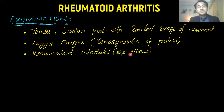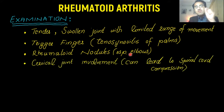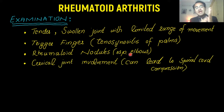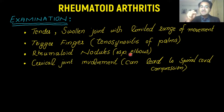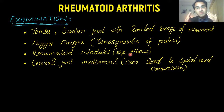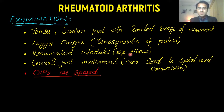Rheumatoid nodules are specially present on the elbows of the patient. Regarding cervical joint involvement: whenever a known patient of rheumatoid arthritis presents with tingling of the hand or back pain, you must suspect cervical joint involvement. RA can cause destruction of the cervical joint, resulting in spinal cord compression, which causes pain in the neck and tingling in the arm due to compression of the nerve roots. Remember that distal interphalangeal joints are spared in rheumatoid arthritis.